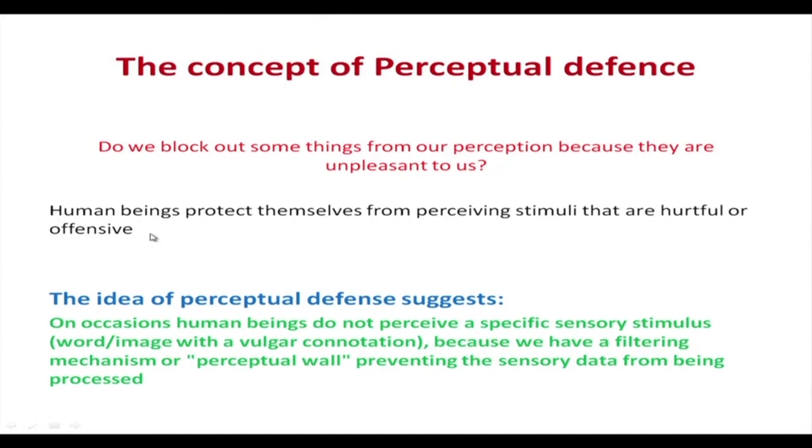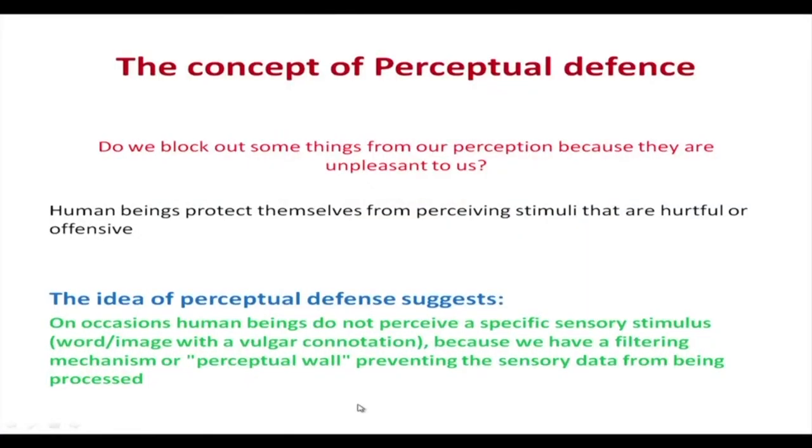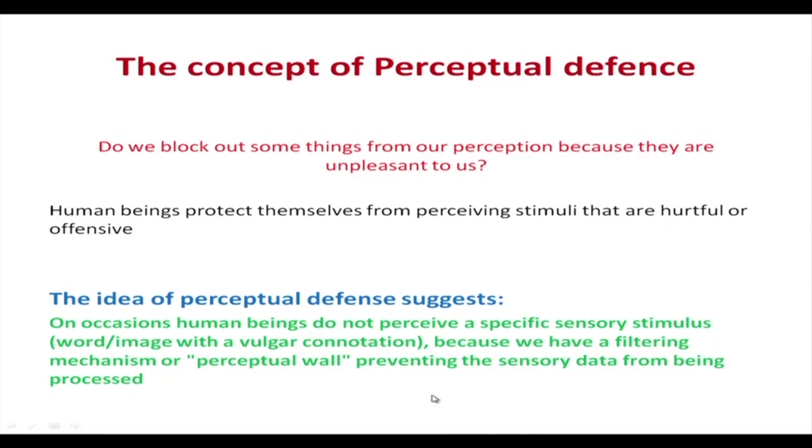What do you think? Human beings do block out some stimuli and protect themselves from perceiving stimuli that are hurtful and offensive. The idea of perceptual defence suggests that on occasions human beings do not perceive a specific sensory stimulus — a word or image especially with a vulgar connotation — because we have a filtering mechanism or perceptual wall preventing the sensory data from being processed. We screen out unwanted, unpleasant material from entering our senses.